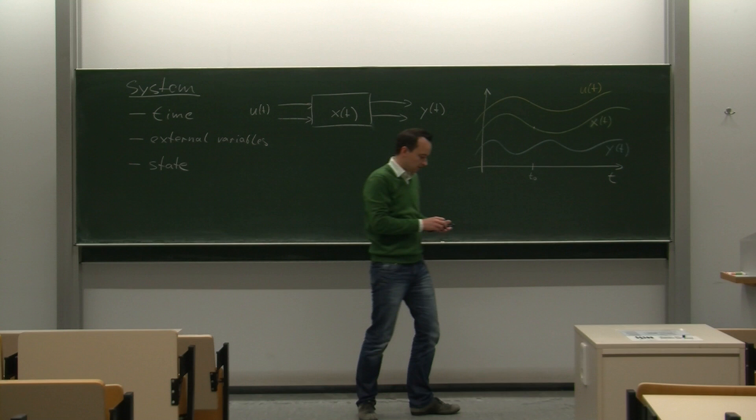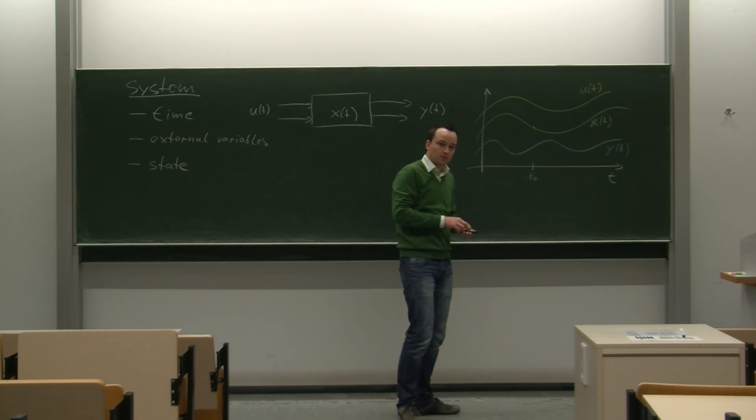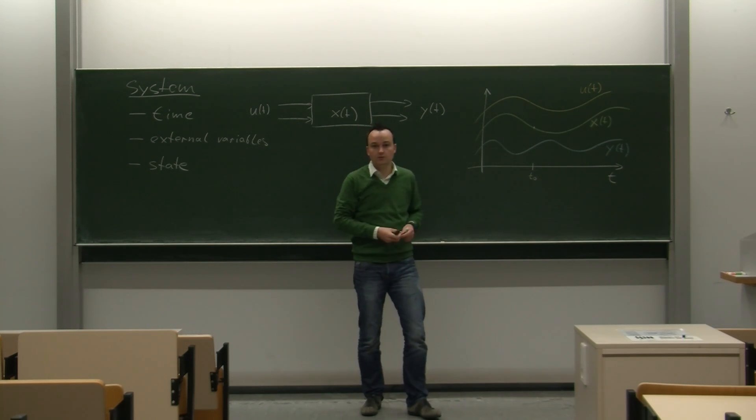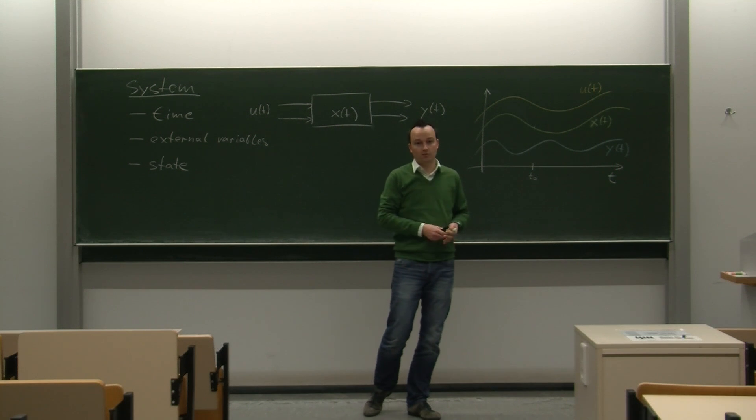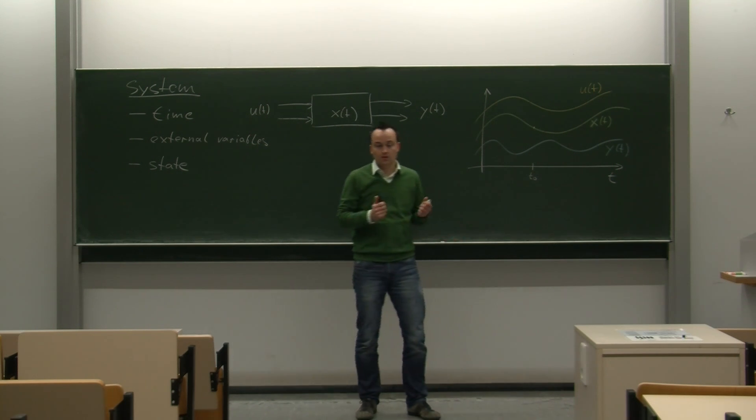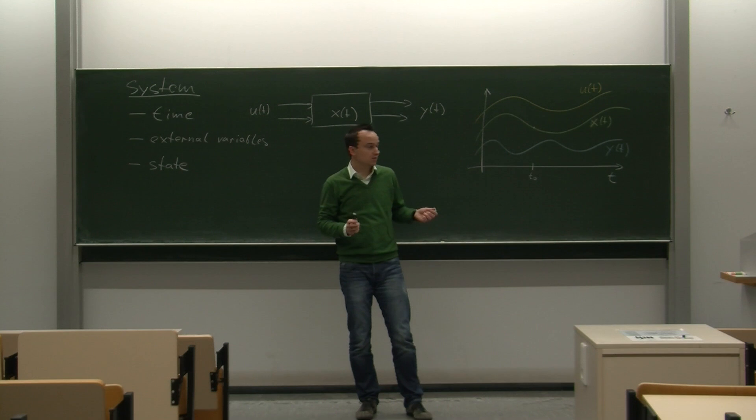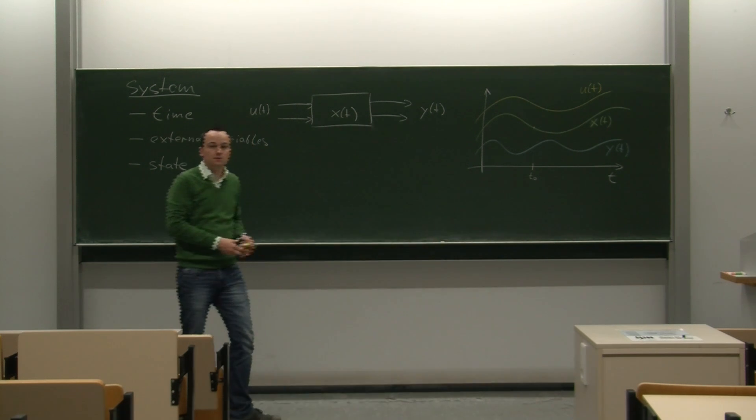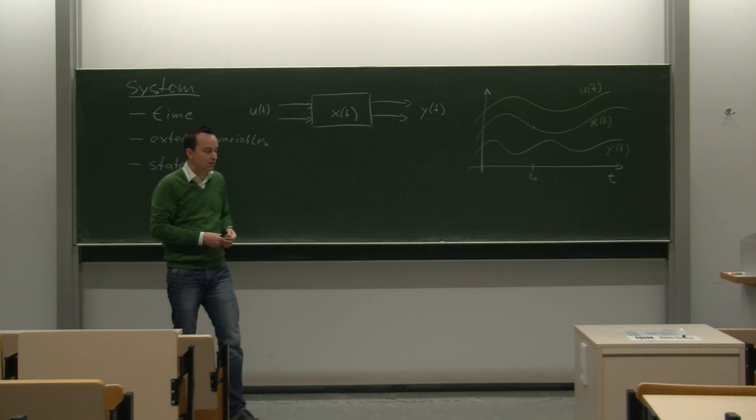And condition three is that we can determine the value of the output at any given time by only the knowledge of the input at that exact moment of time and the state at that very moment of time. So, these are three conditions, and if they are all satisfied, we call this mathematical object that is described by these relations a dynamical system or a control system.